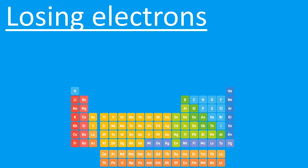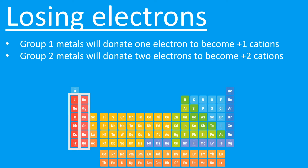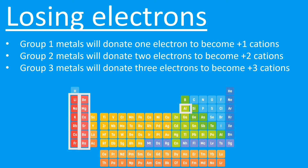Let's look at losing electrons first. Electrons have a negative charge — if you lose a negative charge, it means you have more protons than electrons, and since protons are positive, you become positively charged when you lose an electron. The periodic table can be used to predict the charges on ions. Group 1 metals will donate one electron and become +1 cations. Group 2 will donate two electrons and become +2 cations. Group 3 metals will donate three electrons and become +3 cations.